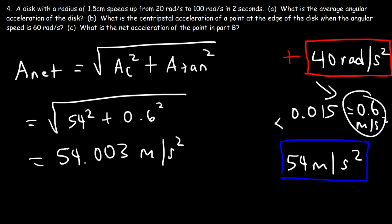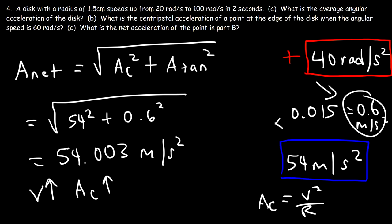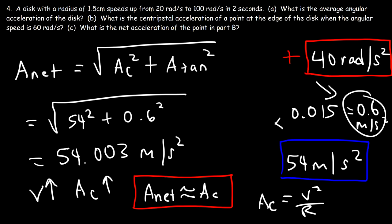As the disk increases in speed, the centripetal acceleration becomes more significant and the tangential acceleration becomes negligible. If tangential acceleration is held constant but speed increases, centripetal acceleration greatly increases because it depends on the square of the speed — doubling the speed increases centripetal acceleration by a factor of 4. At high speeds, net acceleration is approximately equal to the centripetal acceleration; at low speeds with rapid angular acceleration, both components matter.